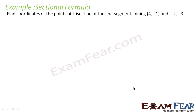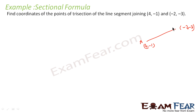Let us take this question: find the coordinates of the trisection of the line joining (4, -1) and (-2, -3). So there are two points — this is (4, -1) and this is (-2, -3), let this be A and B. We have to find the coordinates of the trisection. We divide this into 3 equal parts, and the two trisection points are C and D, each separated by distance k.